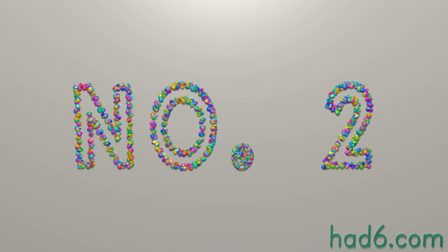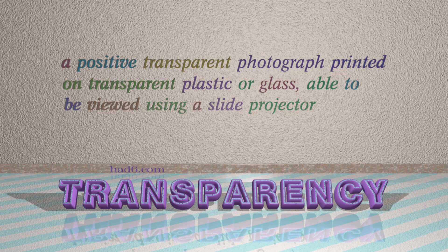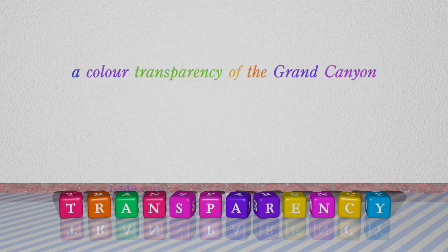Number 2: Transparency. Which means a positive transparent photograph printed on transparent plastic or glass, able to be viewed using a slide projector. For example: A color transparency of the Grand Canyon.